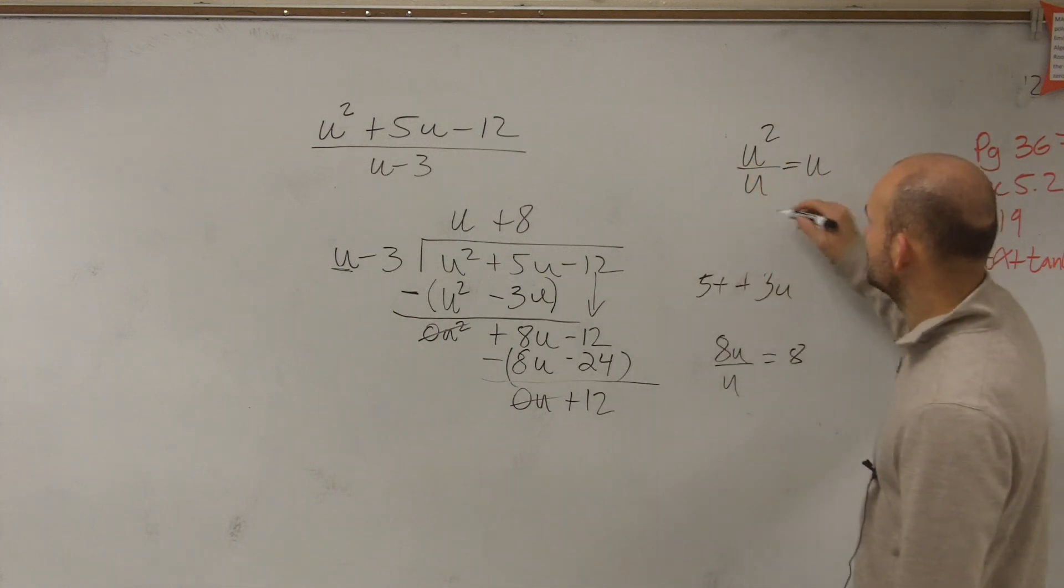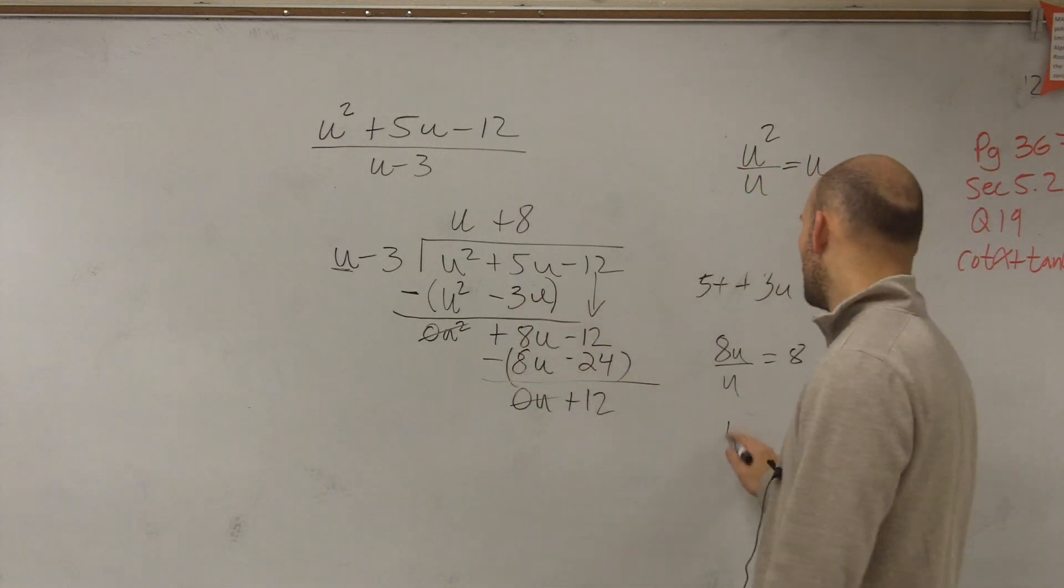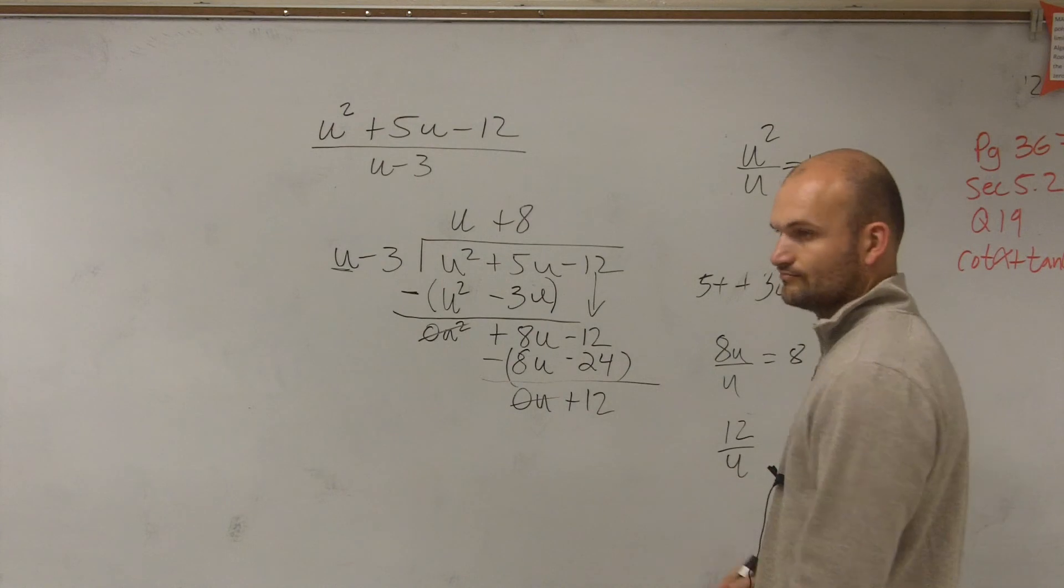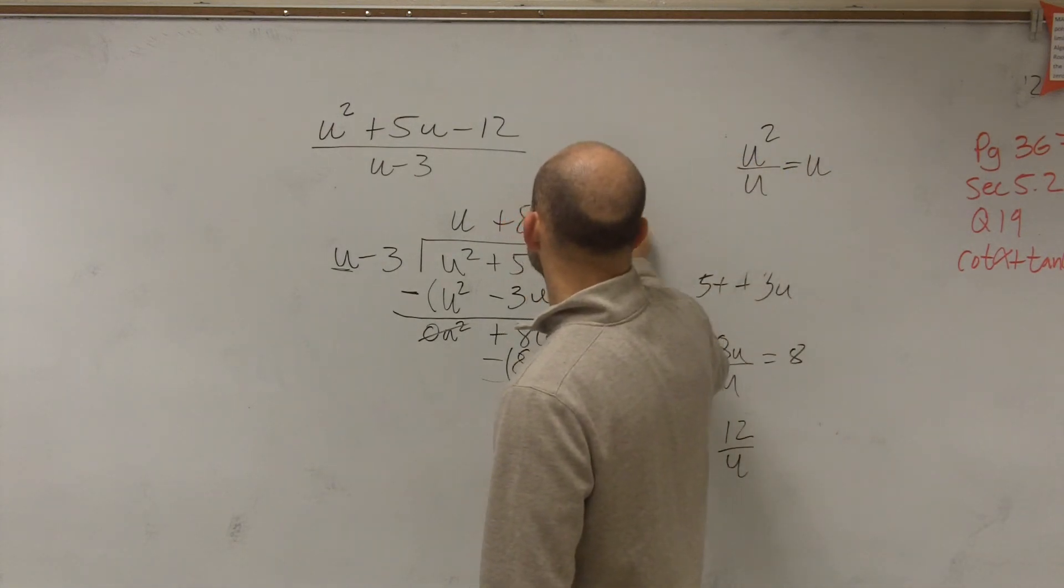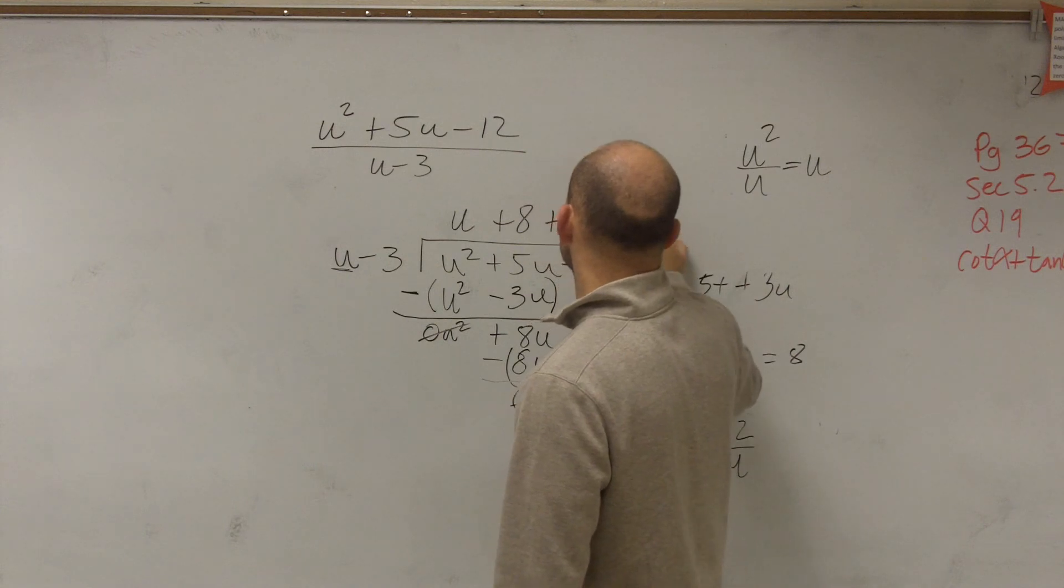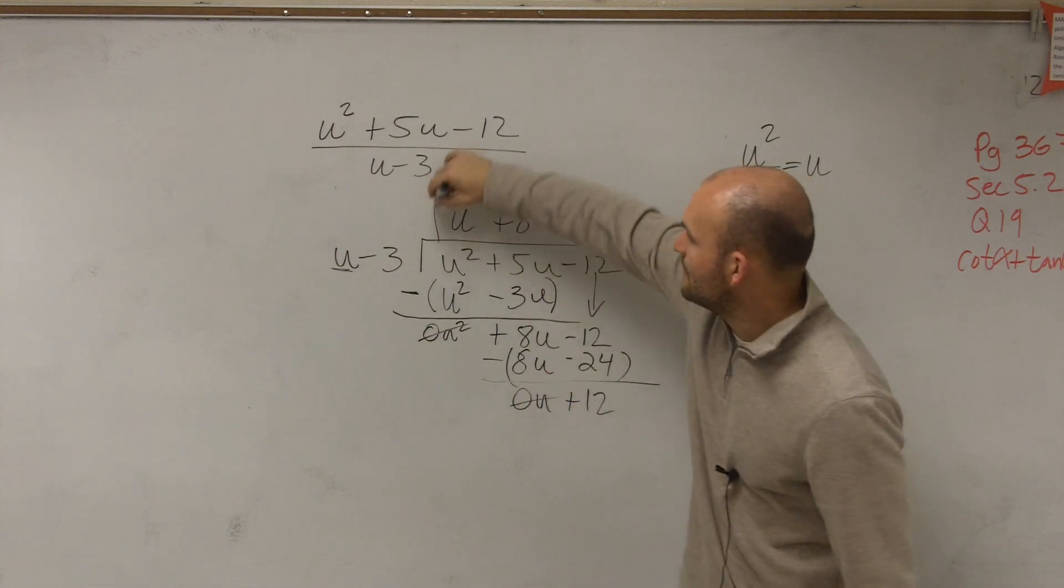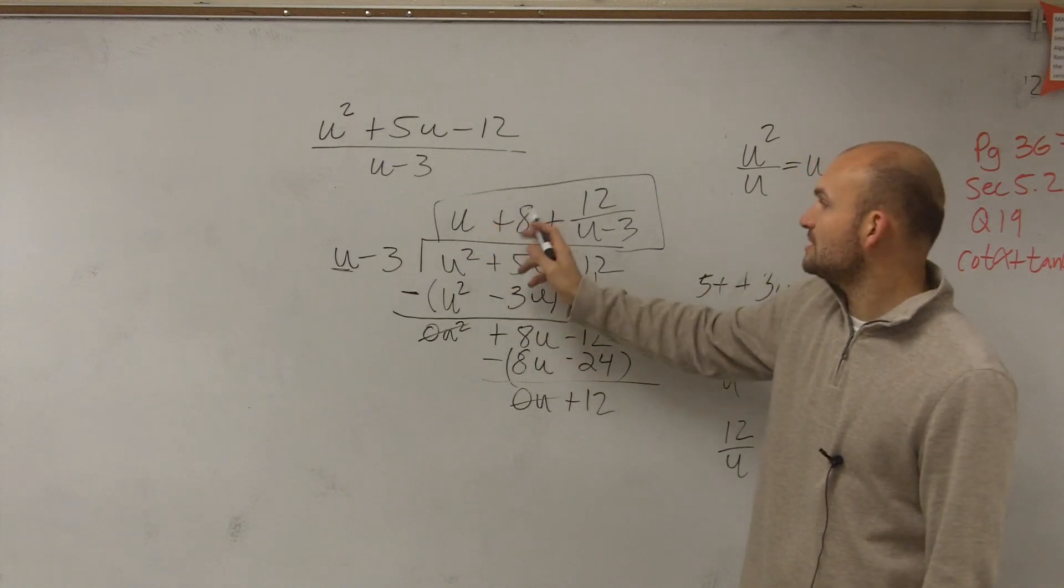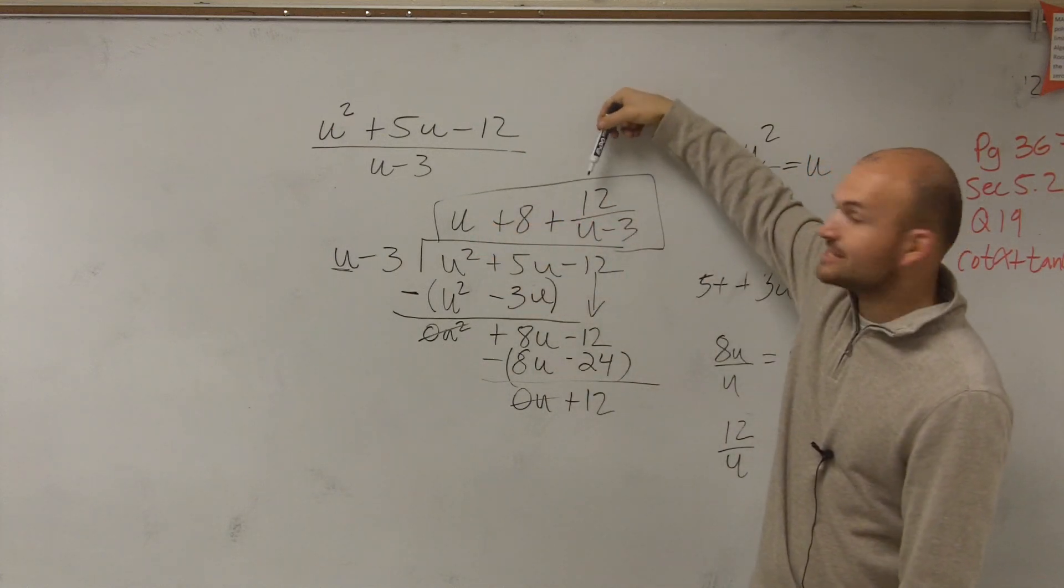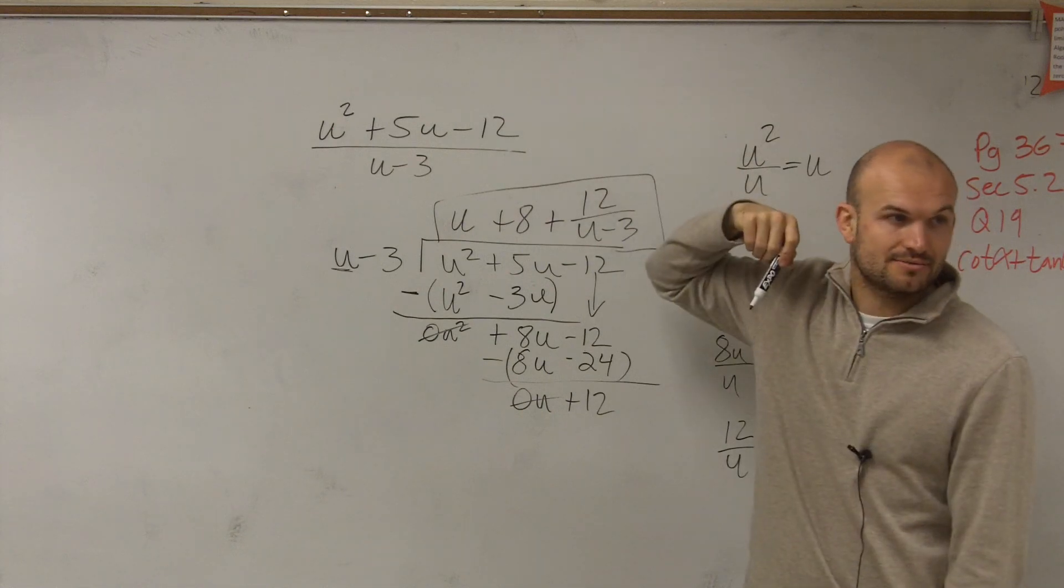Then we say, can 12 be divided by u? Which is no, it's not possible. So therefore, our remainder is going to be 12 divided by our divisor. And that is your final answer: u plus 8 plus our remainder, which we write as the remainder divided by the divisor, 12 over u minus 3.